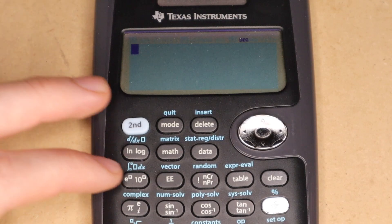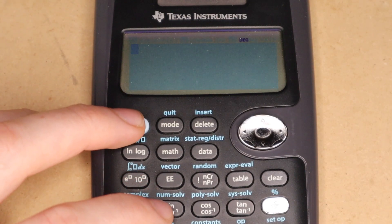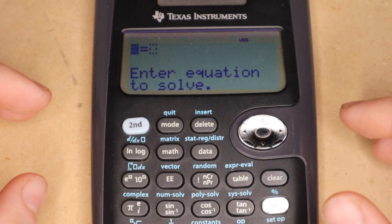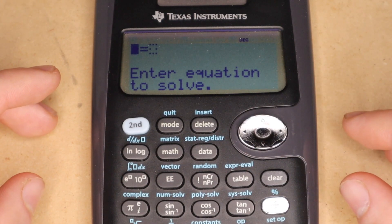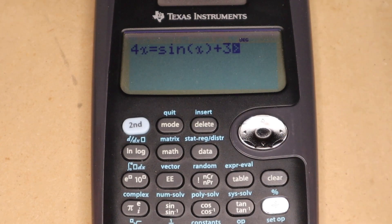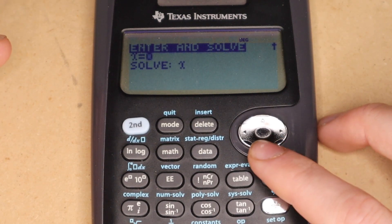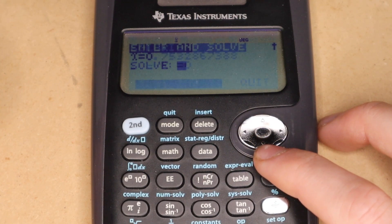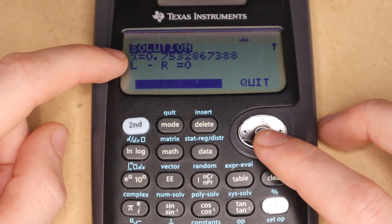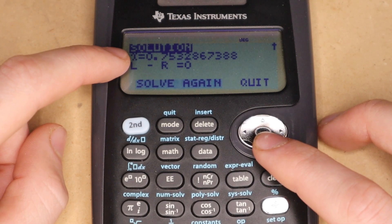So first off is the basic numeric solver function. You can get to that by pressing second sine. And then from here, you can enter pretty much any one variable equation that you want. So here's a pretty simple example. And then all you do is press enter and solve for x. And then after a couple seconds, it will give you your decimal approximation of x right there.